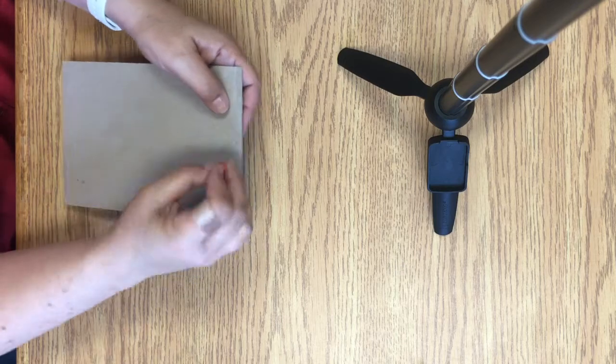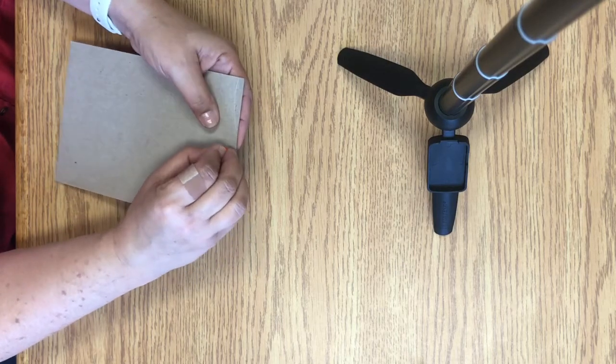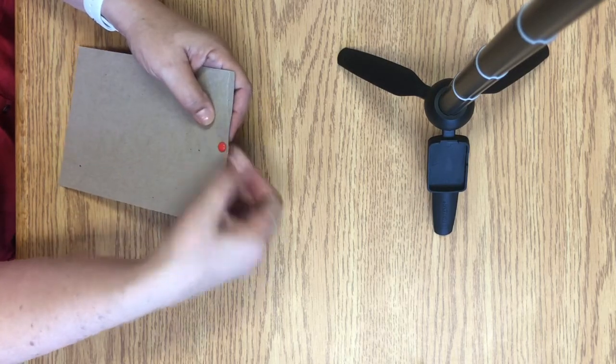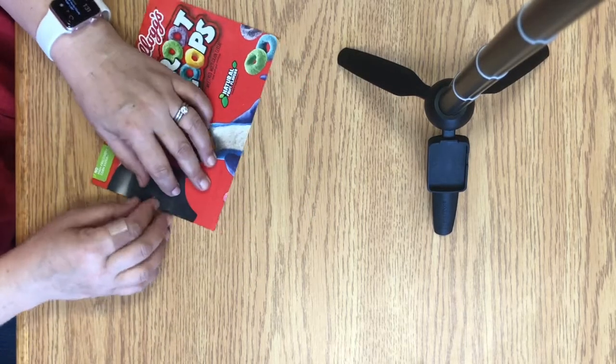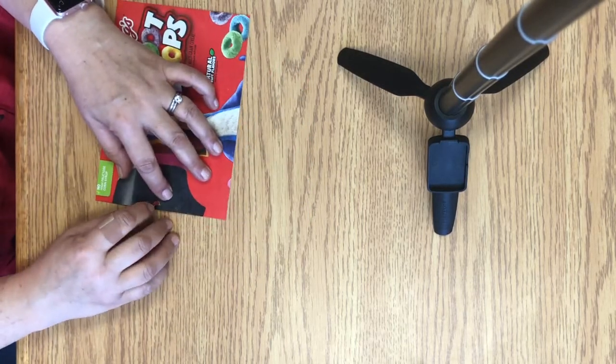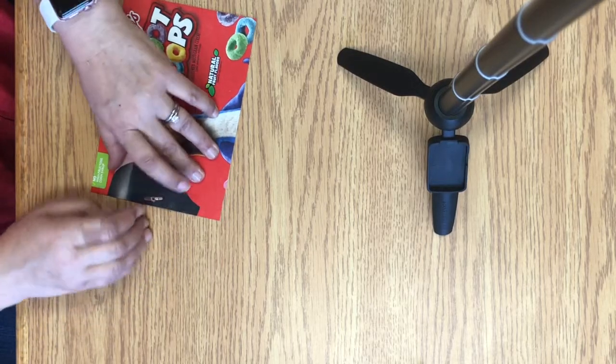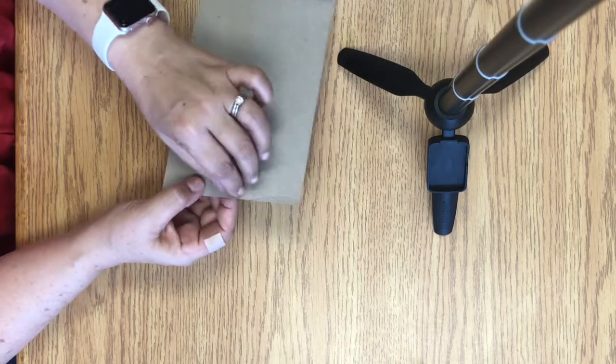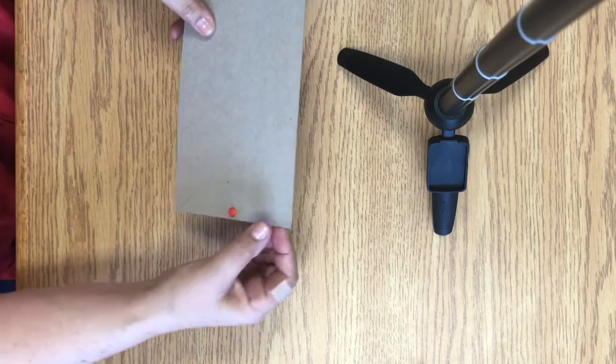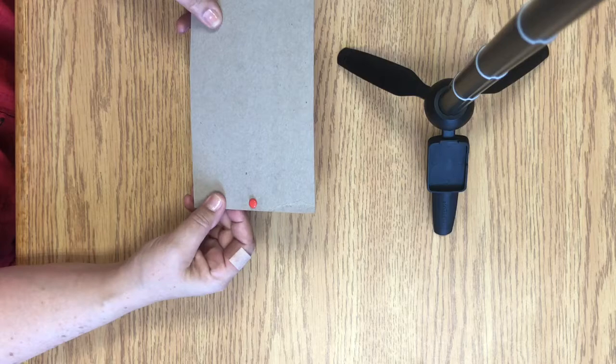Then you're going to take your brad and just put it through the hole. Turn it over and flatten the prongs on the printed side. There you go. So now you have the brad inserted which is going to hold the floss that wraps around the notebook.